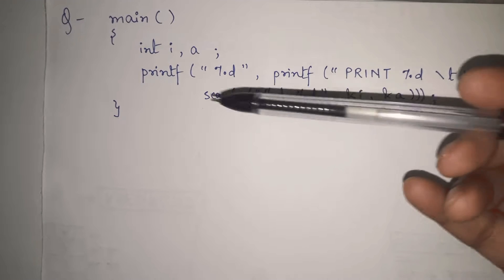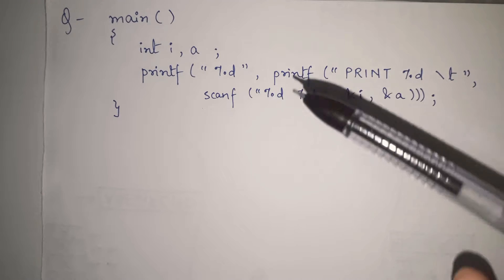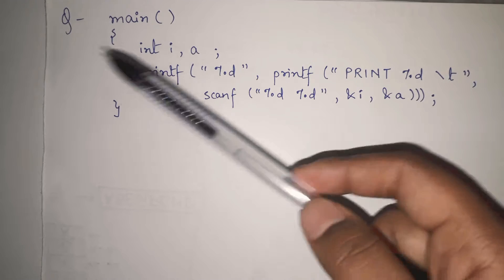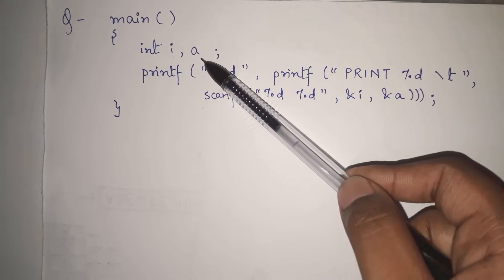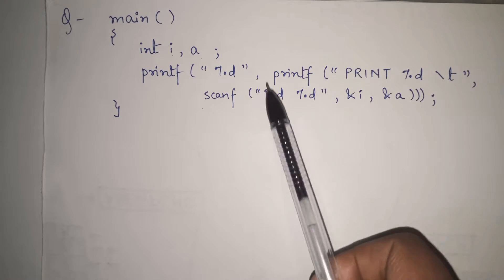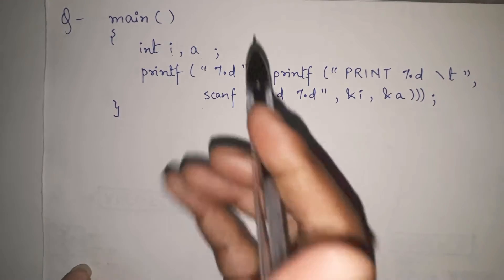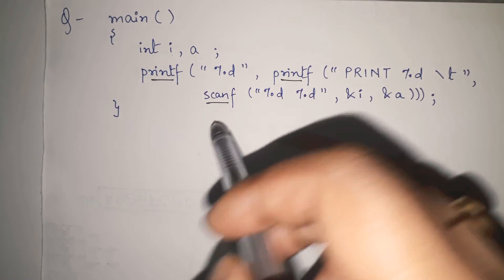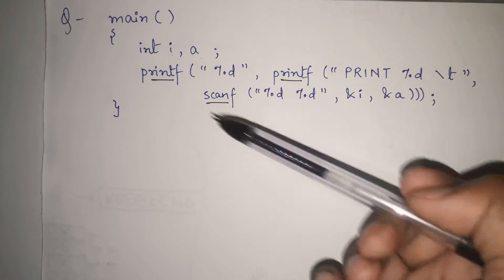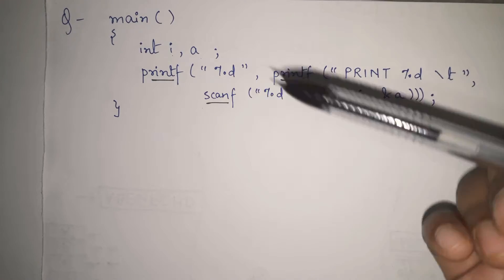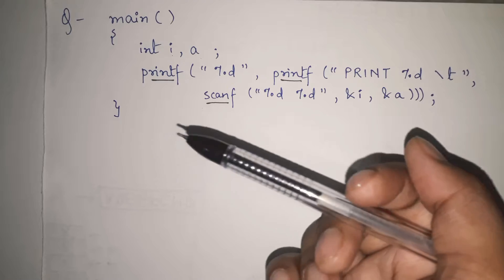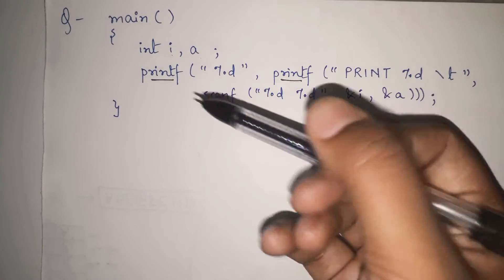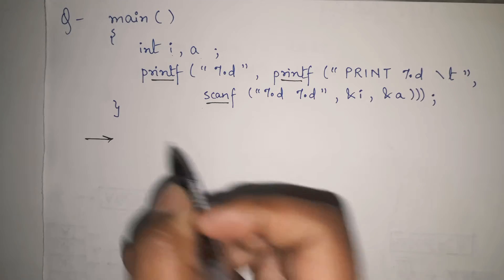In this video I have taken one question asked in GATE — it is a question of data structures. A small programming code is given: inside the main function there are two integers i and a, and we are having nested printfs and scanfs. This is important because most people get it wrong, as we don't use nested printfs and scanfs in day-to-day programming.